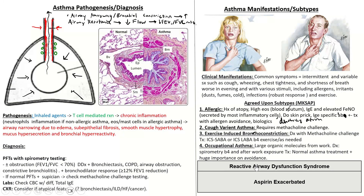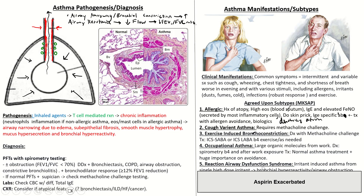Reactive Airway Dysfunction Syndrome, also called irritant-induced asthma, follows an extremely high-dose single exposure to a pulmonary irritant. For example, a patient who inhaled a large amount of bleach while cleaning developed severe wheezing, was hospitalized, and afterward had new-onset bronchial hyperreactivity and airway obstruction — despite no prior asthma history. This is thought to result from epithelial damage increasing airway hypersensitivity. Treat the same as standard asthma.